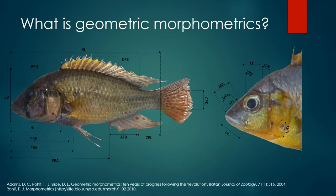So what is geometric morphometrics? Well, traditional caliper-based measurements only really describe the distance between two points. They don't describe the points in relation to all the other points, and they also don't describe the angles between the points, so you can miss a lot of variation between shapes. To overcome these problems, a more sophisticated method called geometric morphometrics was created.